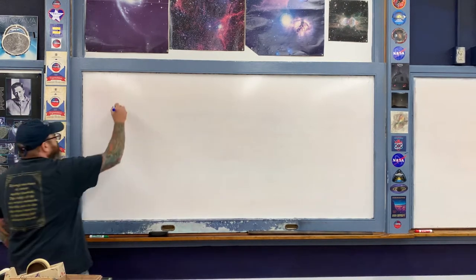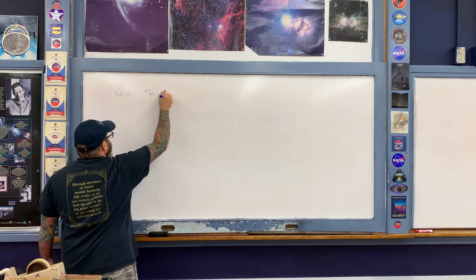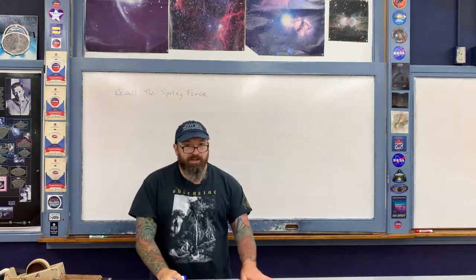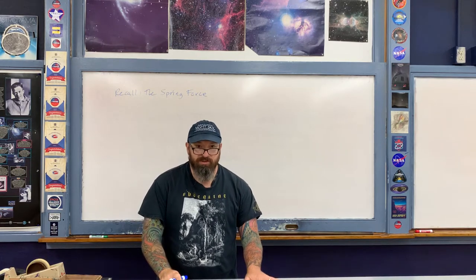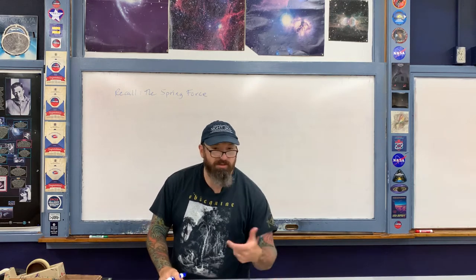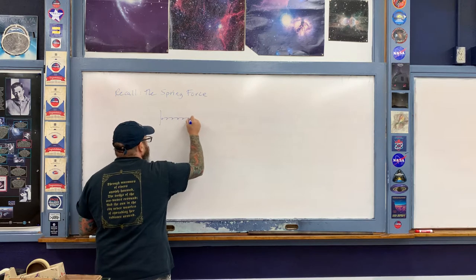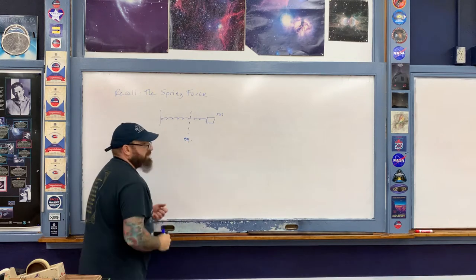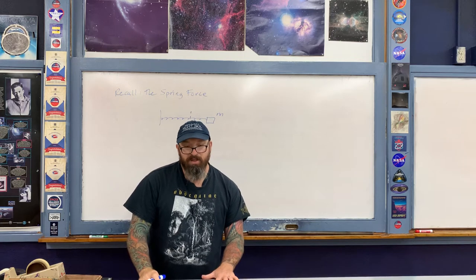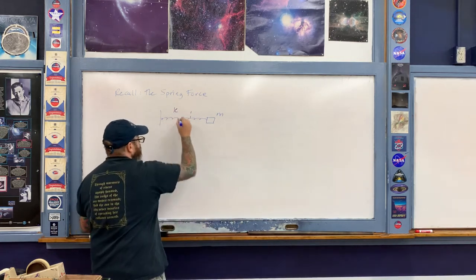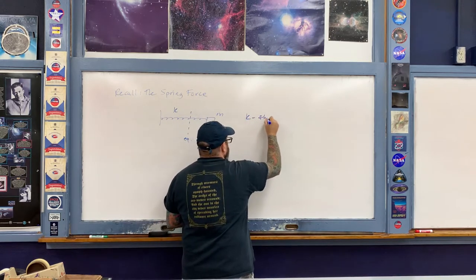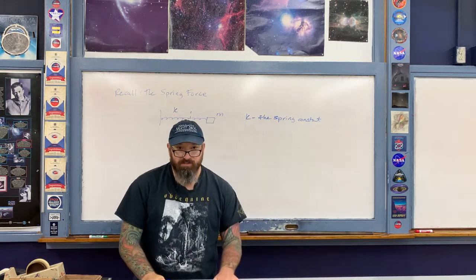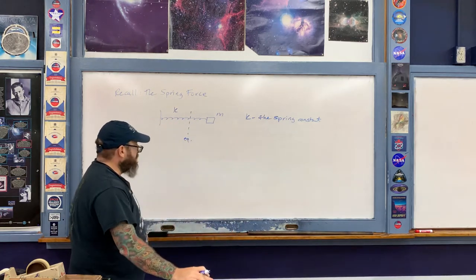Let's recall the spring force. If we have a mass attached to a spring oscillating about the equilibrium position on a horizontal frictionless surface, there's a typical diagram: a wall or attachment, then the spring, then mass m attached to the spring. The equilibrium position is the unstressed or uncompressed position of the spring. The spring has associated with it a spring constant k, which is a measurement of the stiffness or looseness of the spring. The oscillation occurs about the equilibrium position.